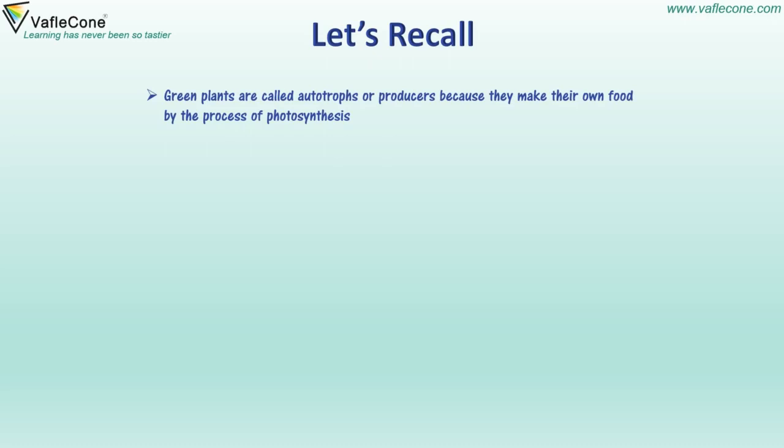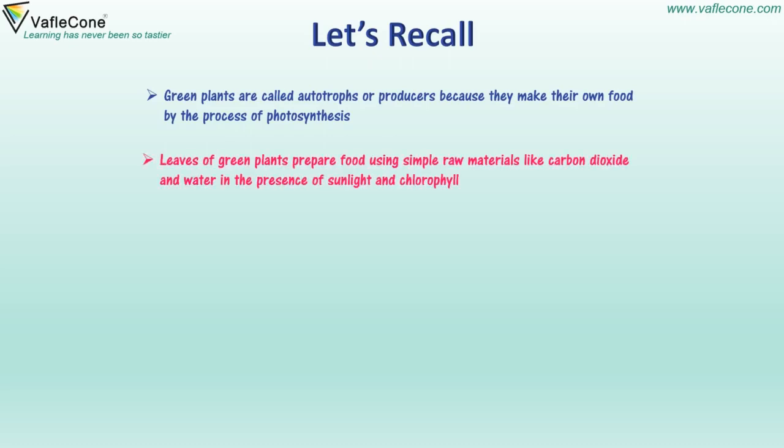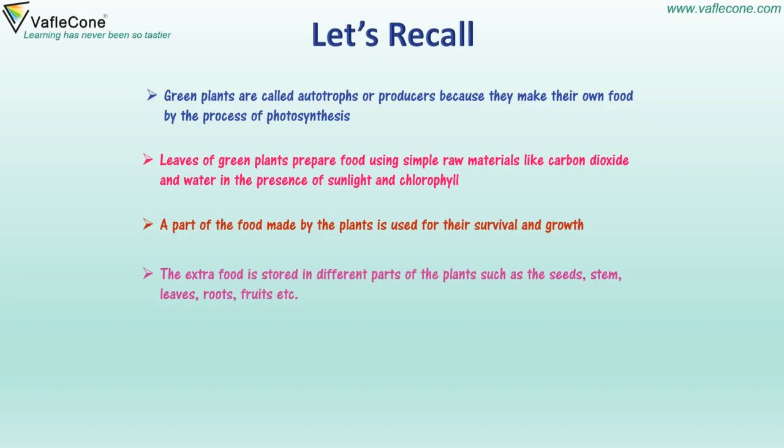Green plants are autotrophs or producers because they make their own food by the process of photosynthesis. Leaves of green plants prepare food using simple raw materials like carbon dioxide and water in the presence of sunlight and chlorophyll. A part of the food made by plants is used for their survival and growth. The extra food is stored in different parts of the plant such as seeds, stem, leaves, roots, fruits, etc.